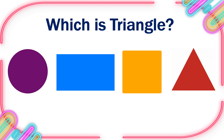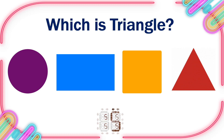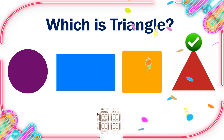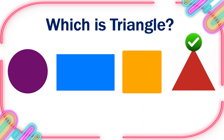Which is Triangle? 10, 9, 8, 7, 6, 5, 4, 3, 2, 1, 0. This is the right one.